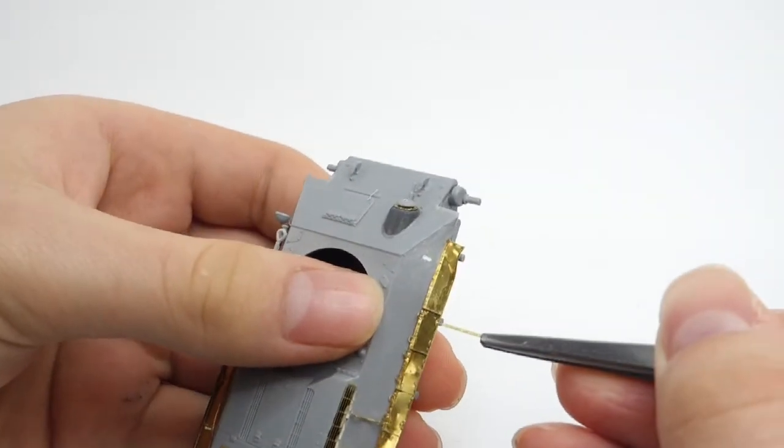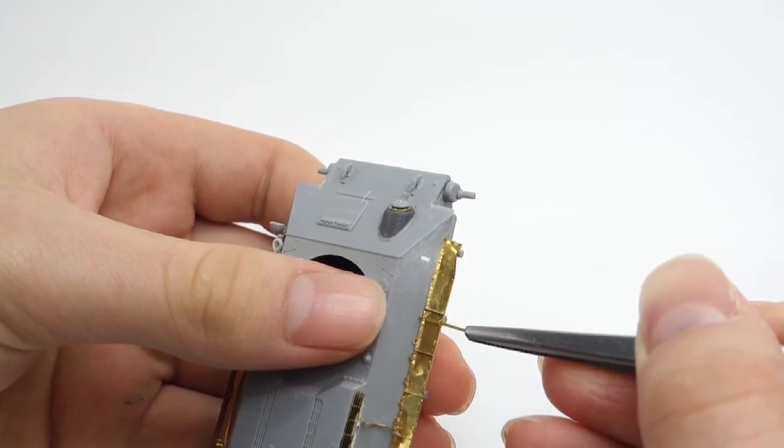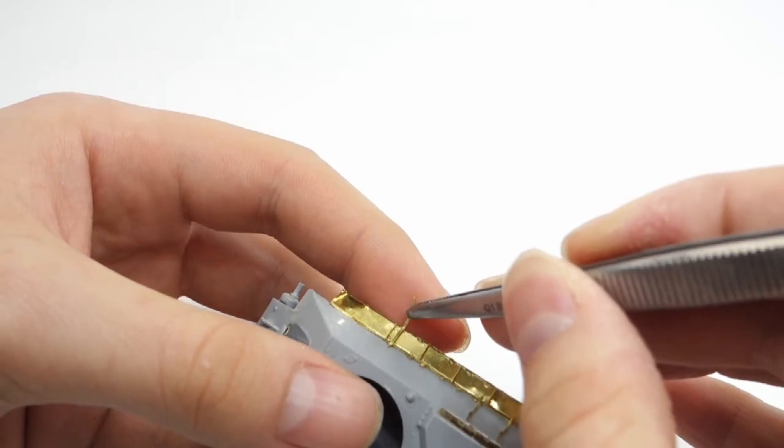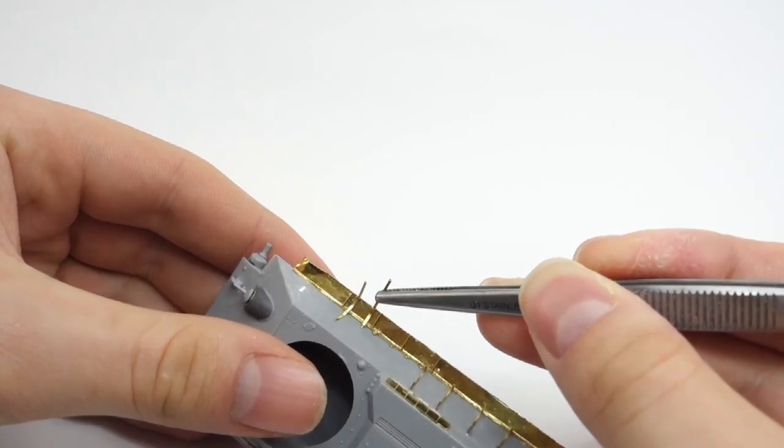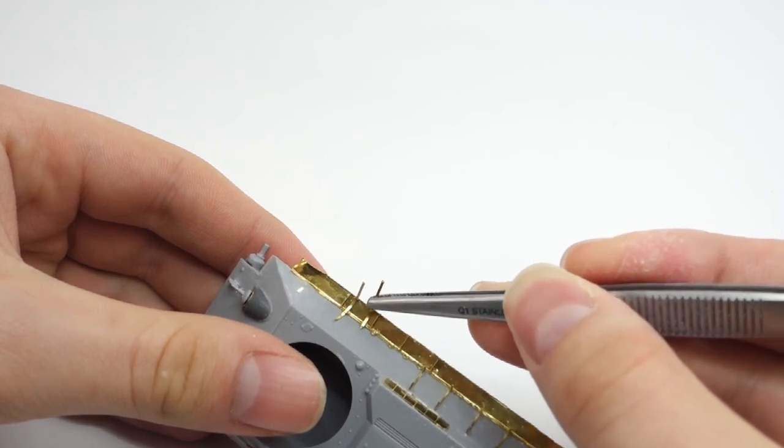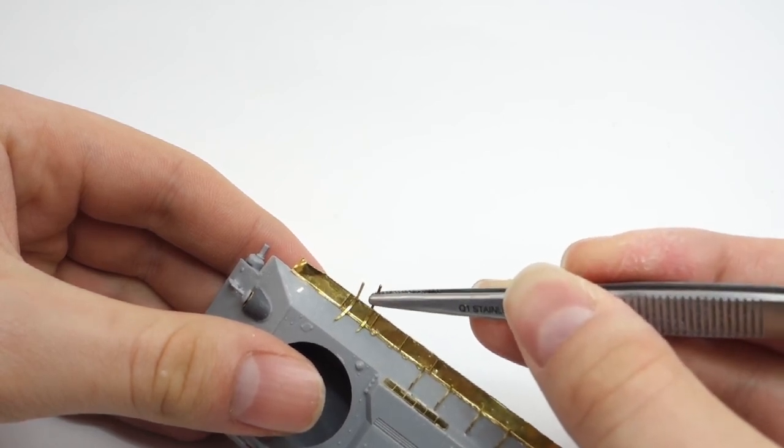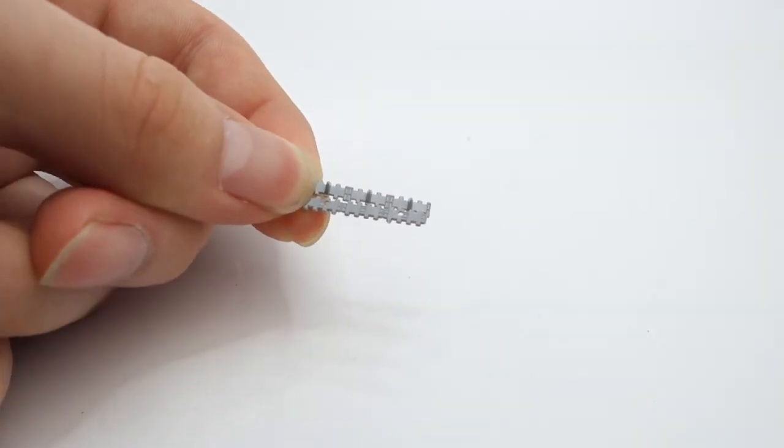Also the hull is almost finished. All that's left to add is some stowage, and for this purpose I've used some tracks from the set and some strips from photo-etched set. I of course also added a chest and some spare track links on the fender, but I unfortunately lost the video of adding those to the model.